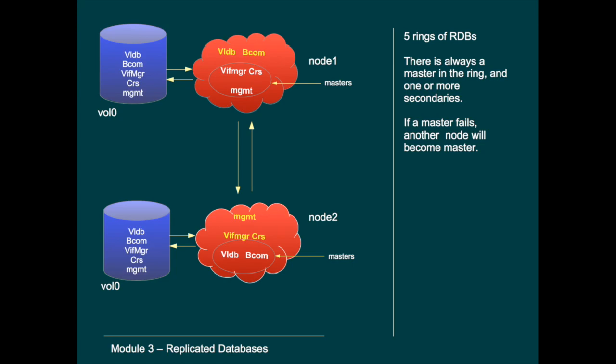Very often one node is responsible as master for all five RDB rings, but this is not necessarily the case. Sometimes one node manages some RDB rings and another node manages other RDB rings. You cannot really influence that. In this picture we see three ring masters on node one and two ring masters on node two. In a four-node cluster you would always have one master and three secondaries.